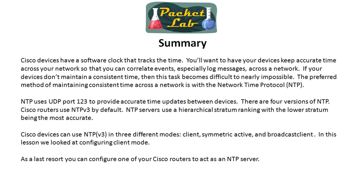Let's get back to the summary. Cisco devices have a software clock that tracks time, and you're going to want your time across your network to be at minimum synchronized across all devices, but you prefer to have it accurate and synchronized. You can do that a number of different ways. You can manually set all your devices, but that's not the best method. Probably the best method is to use Network Time Protocol because it's set up to do this and it's pretty easy to set up, as we saw in this lesson.